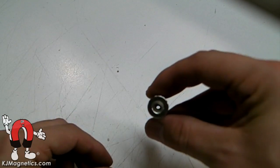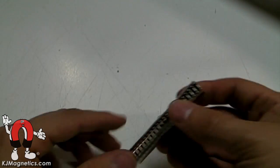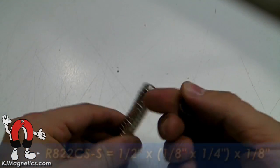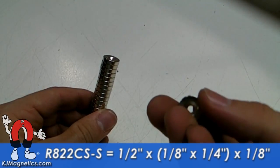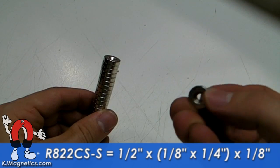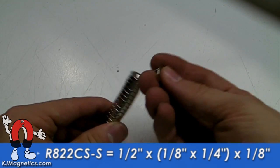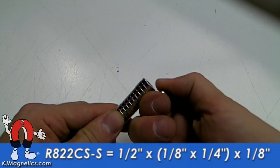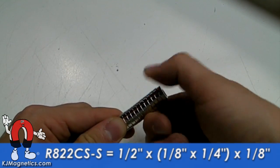Here we have some of our smaller countersunk rings. These are the R822CS-S. The dash-S designation means that when mounted with a screw, the south pole of the magnet will face out. The R822CS is designed to accept a number 5 screw.